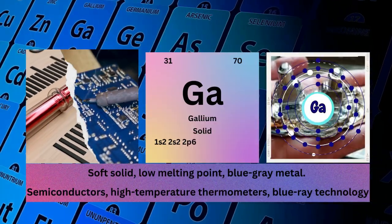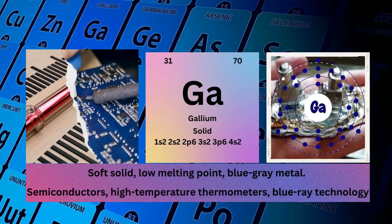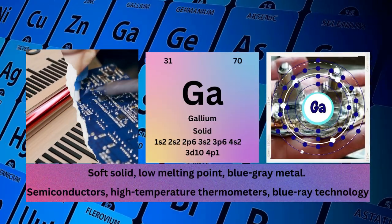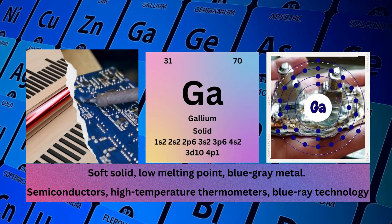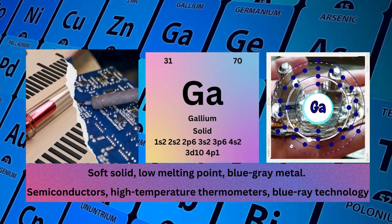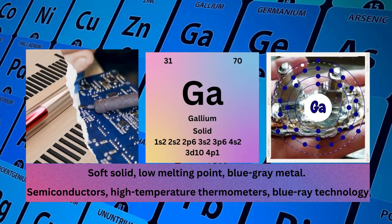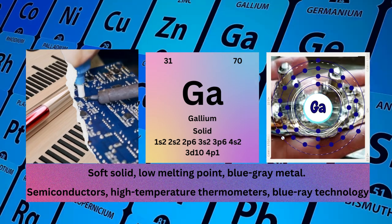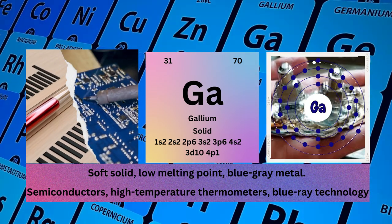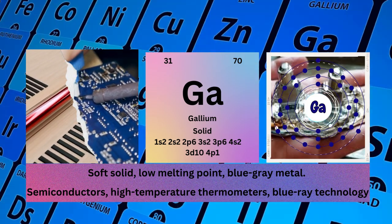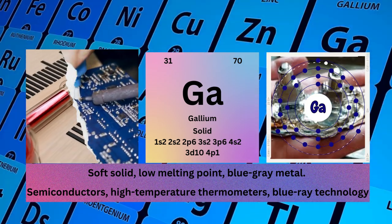Gallium. Atomic number 31. Mass number 70. Symbol GA. State solid. Electronic configuration 1s2 2s2 2p6 3s2 3p6 4s2 3d10 4p1.